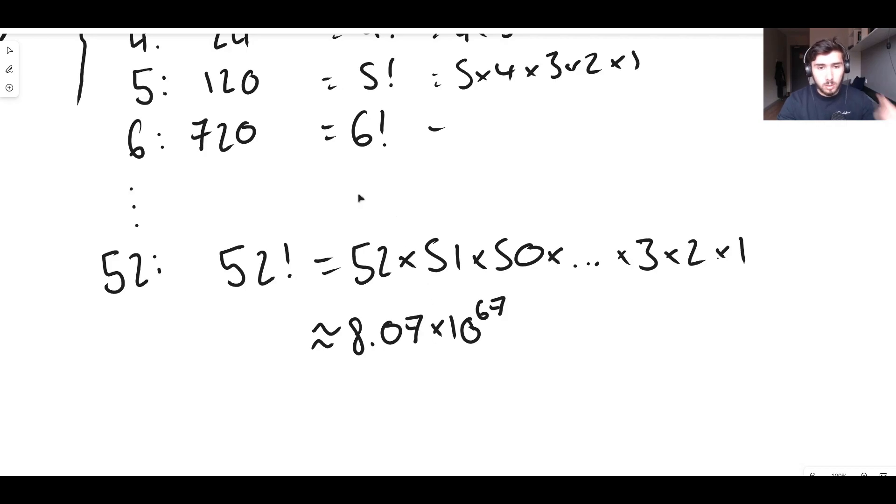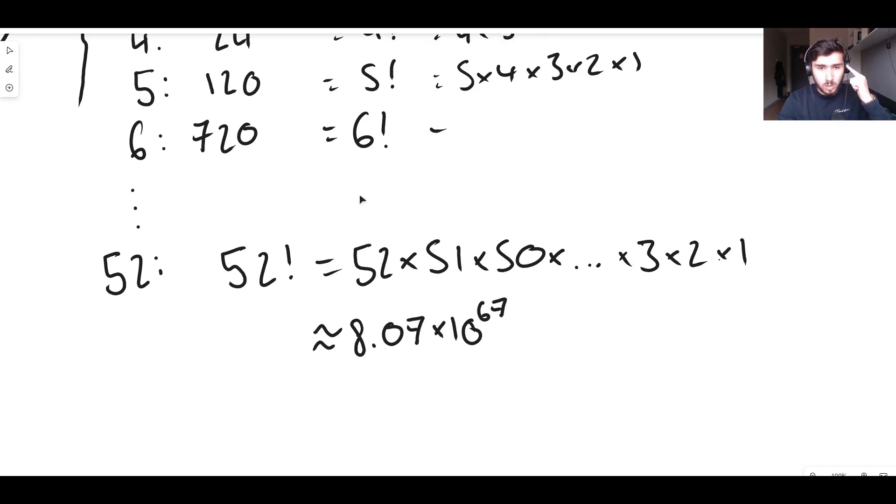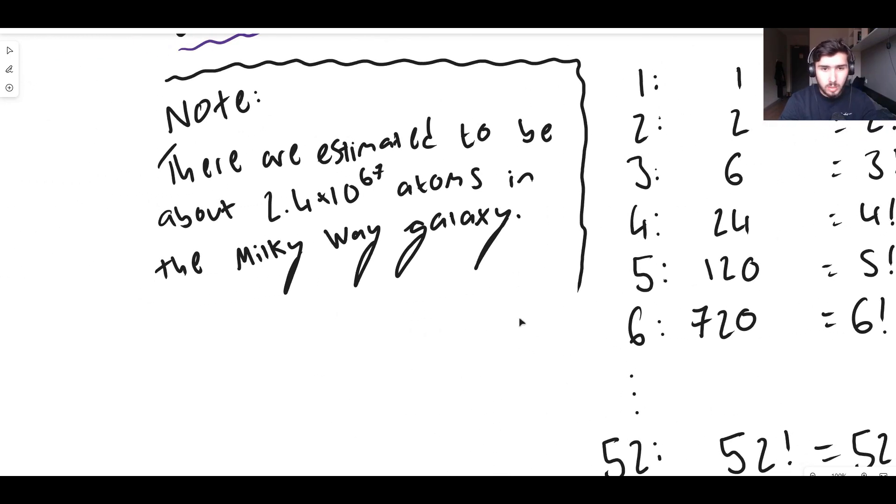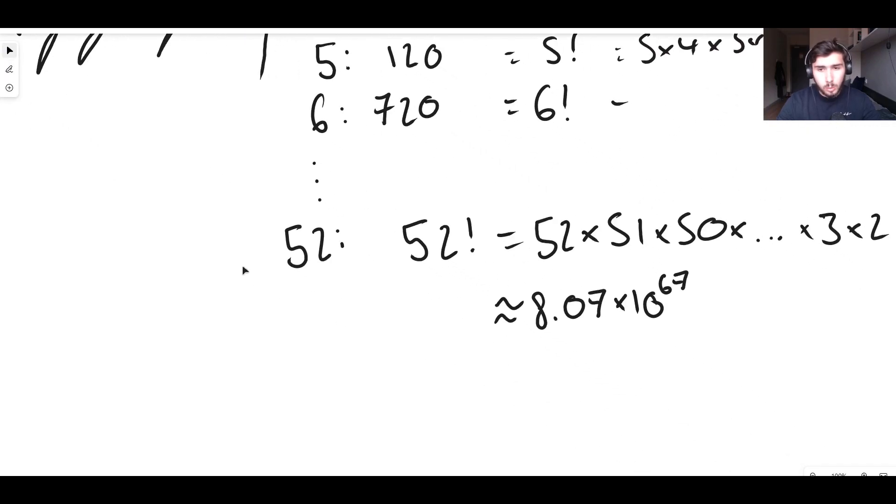But actually let's keep that number in our head. 8.07 times 10 to 67. How many atoms do we have in the entire galaxy? Well it's just 2.4 times 10 to the power of 67.